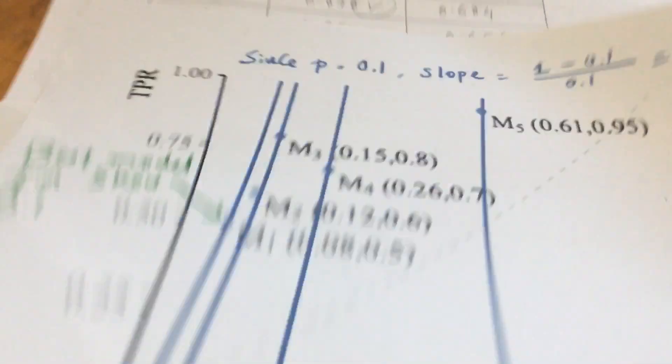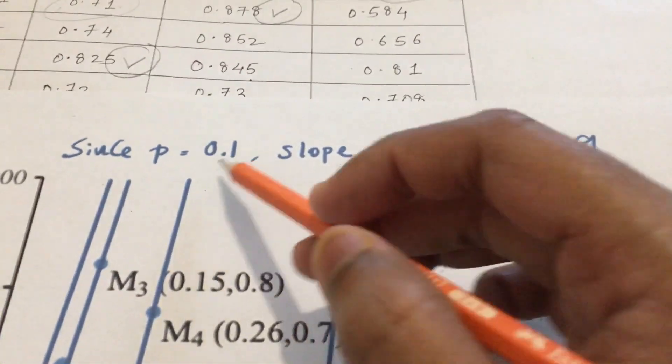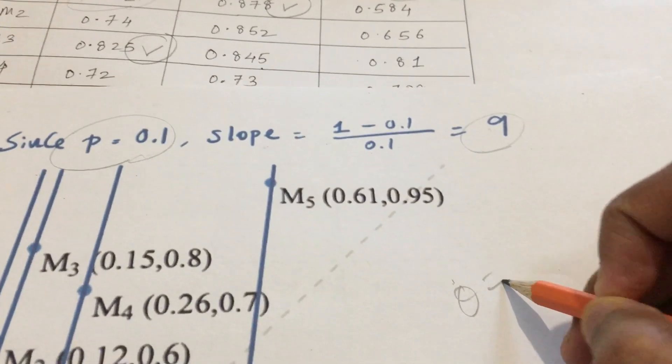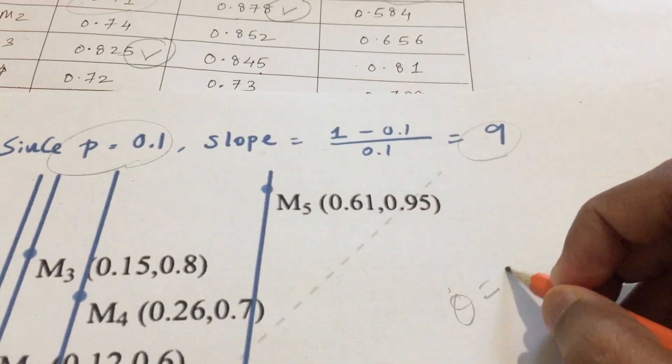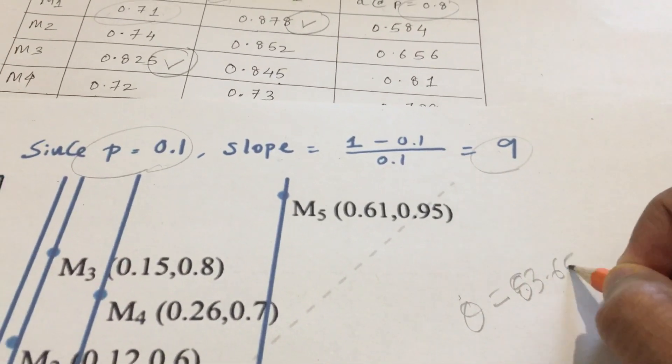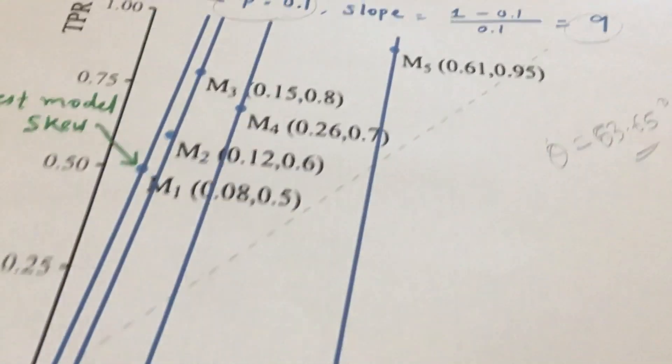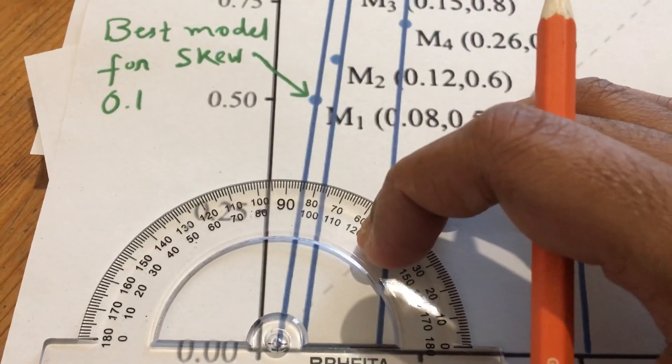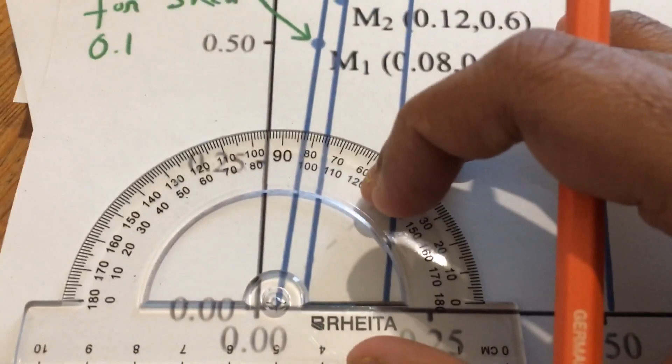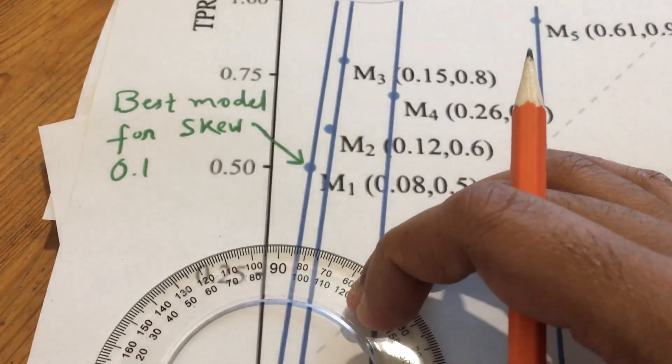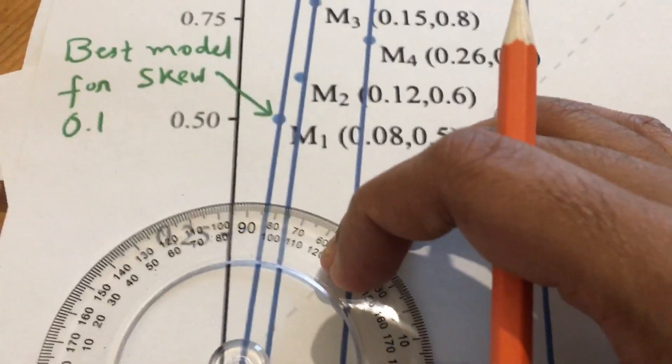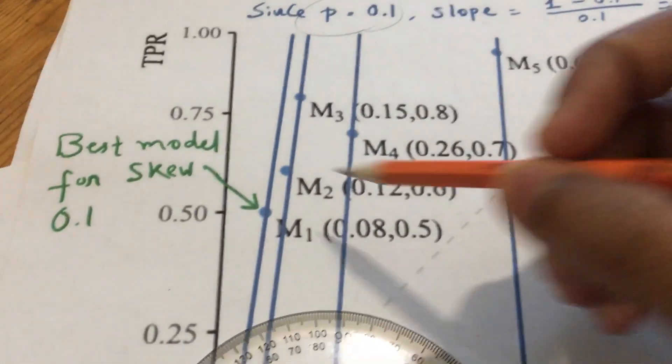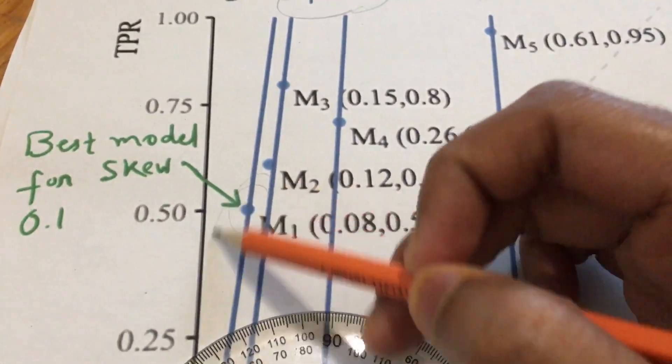Similarly for class skew 0.1 we have this slope that is 9. For this, the theta value comes out to be 83.65 degrees. We put the protractor here and if we estimate this, we get this line at 83.64, something like 84. Similarly for all this you draw the lines so you get the best model for this skew, which is this one.